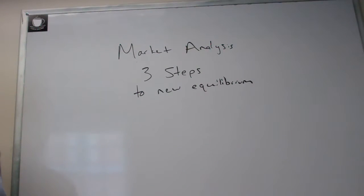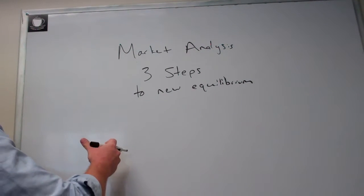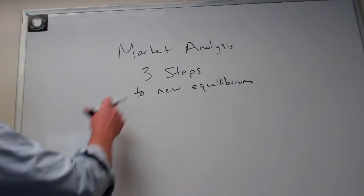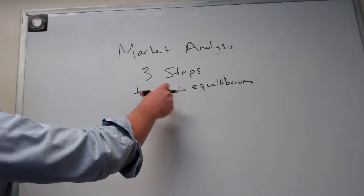Today we want to use supply and demand to analyze markets and think about how markets get from one equilibrium to another equilibrium after something changes that affects the entire market. So we're going to identify three steps, always three steps, where we go from an old equilibrium to a new equilibrium.